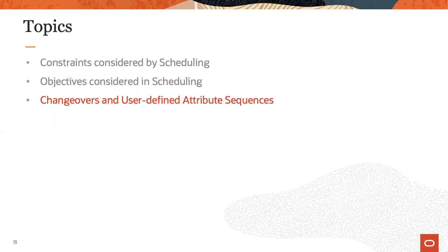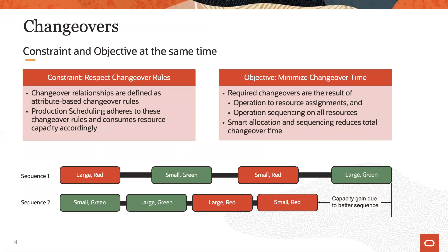The last topic of this lesson addresses changeovers and user-defined sequences. Changeovers have the nature of both constraints and objectives at the same time. Properly accounting for changeovers that consume resource capacity essentially corresponds to considering a constraint. At the same time, via smart sequencing decisions, the total amount of time needed for changeovers can be reduced — in that aspect, the minimization of changeover time is an objective in scheduling.